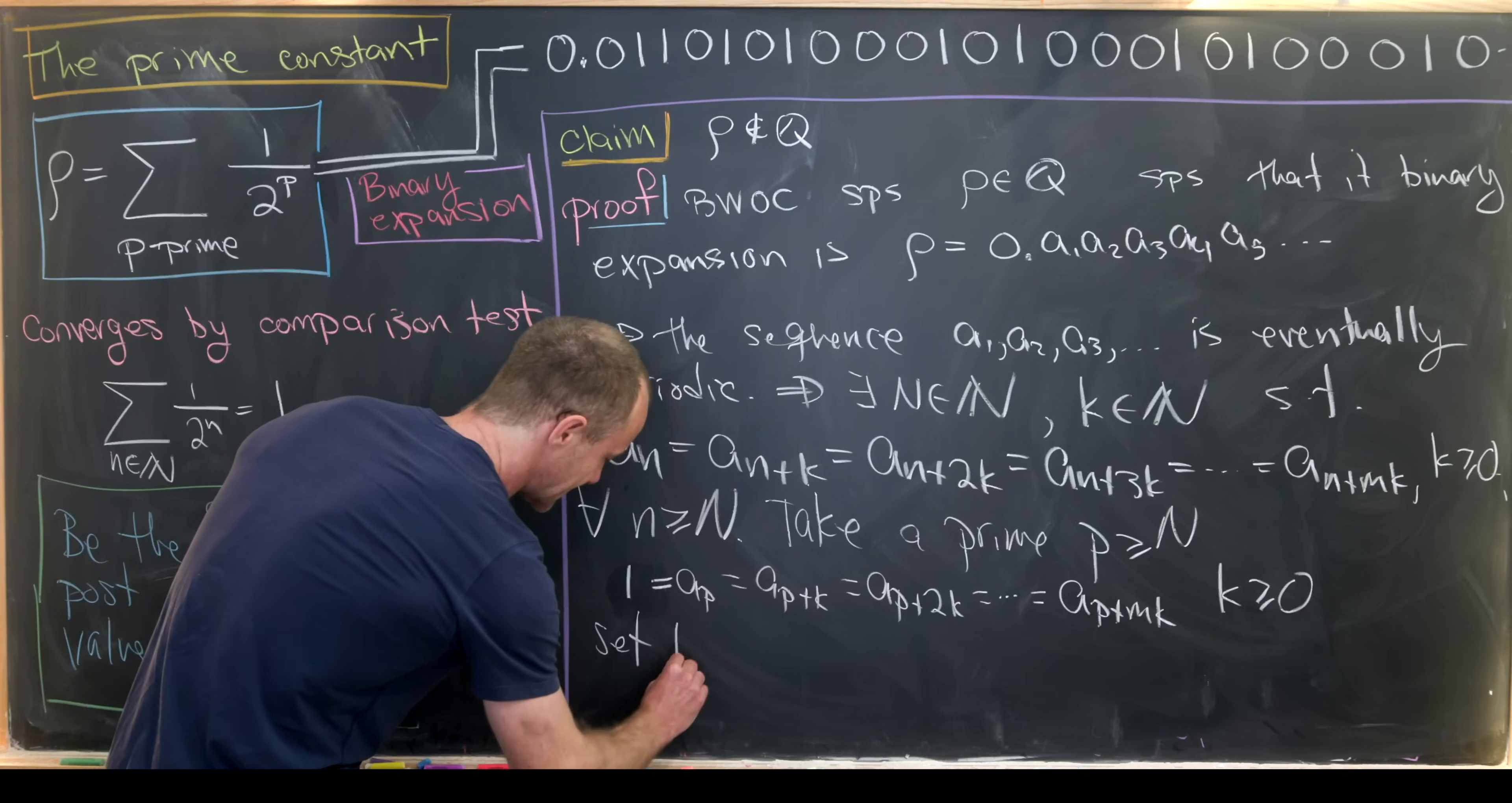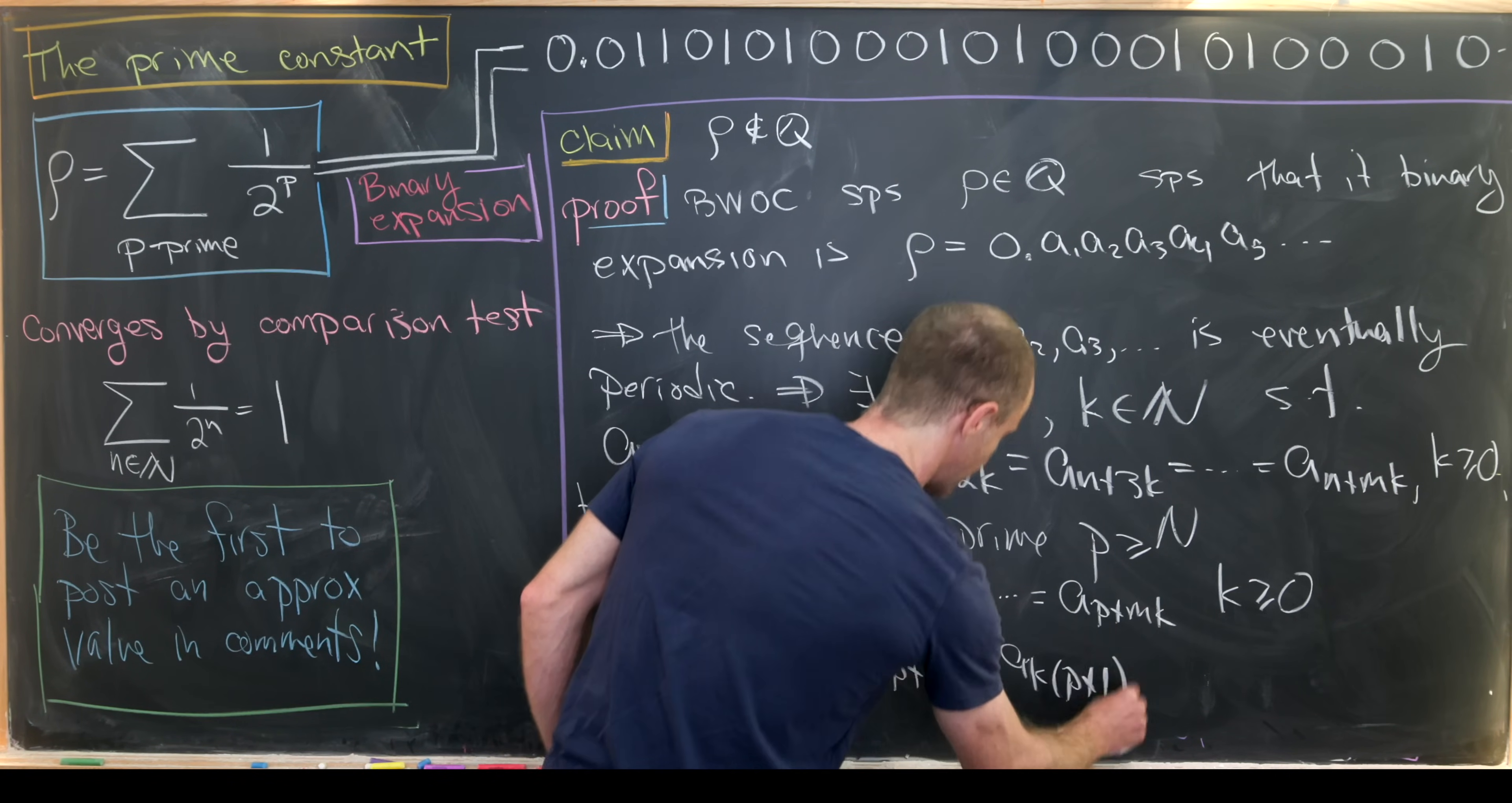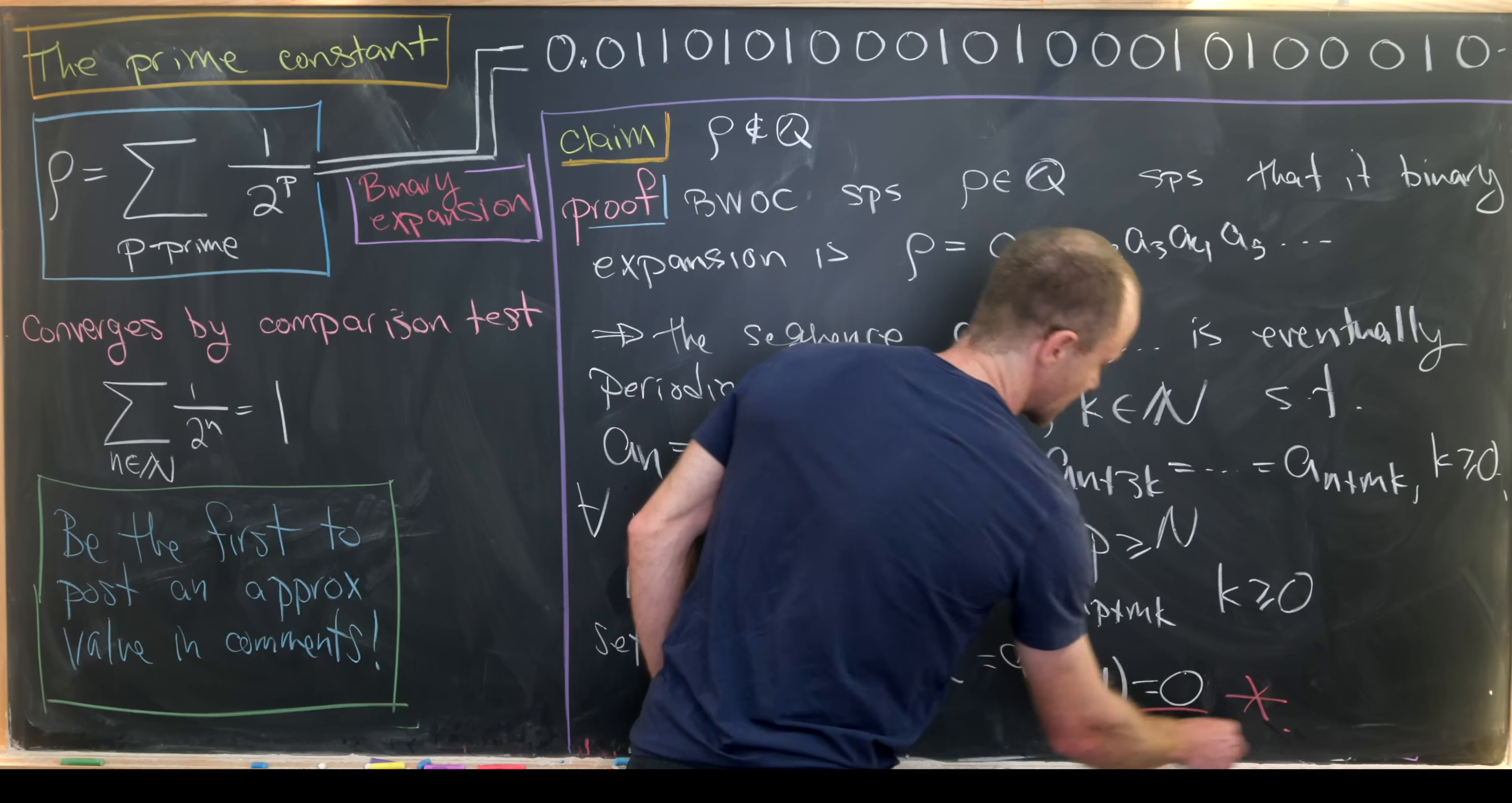Next, let's set k equal to p in this sort of index right here. And that tells us that 1 is also equal to a sub p plus p times k. But we can factor that index to give us a sub k times p plus 1. But there's our problem. Because k times p plus 1 is composite, but we know we get a 0 at every composite part. So here we have this is equal to 0. But let's see what we've just constructed. We've constructed the equation 1 is equal to 0, which is a clear contradiction.